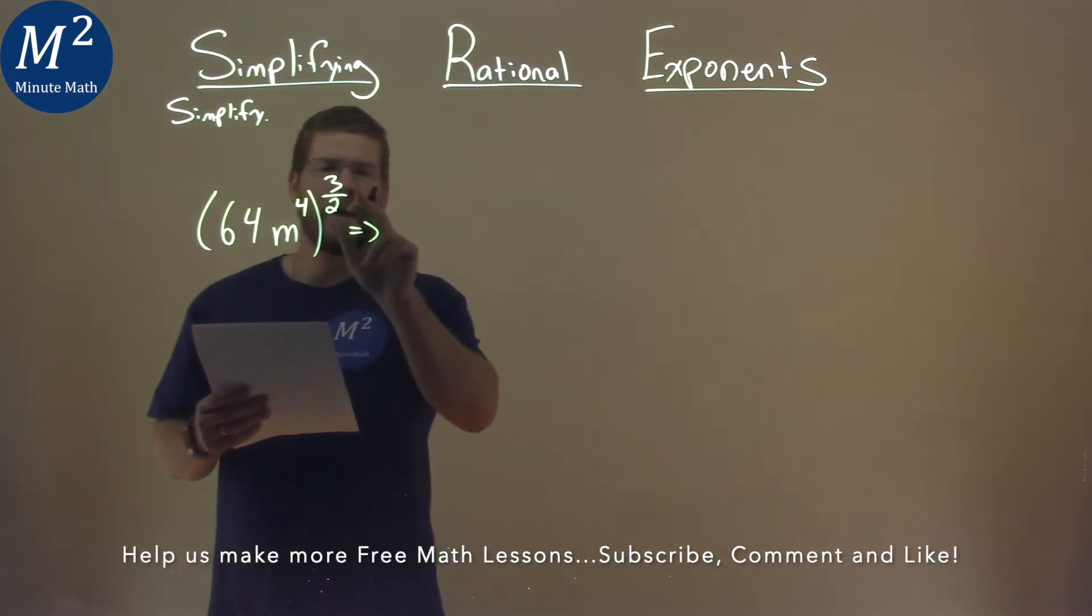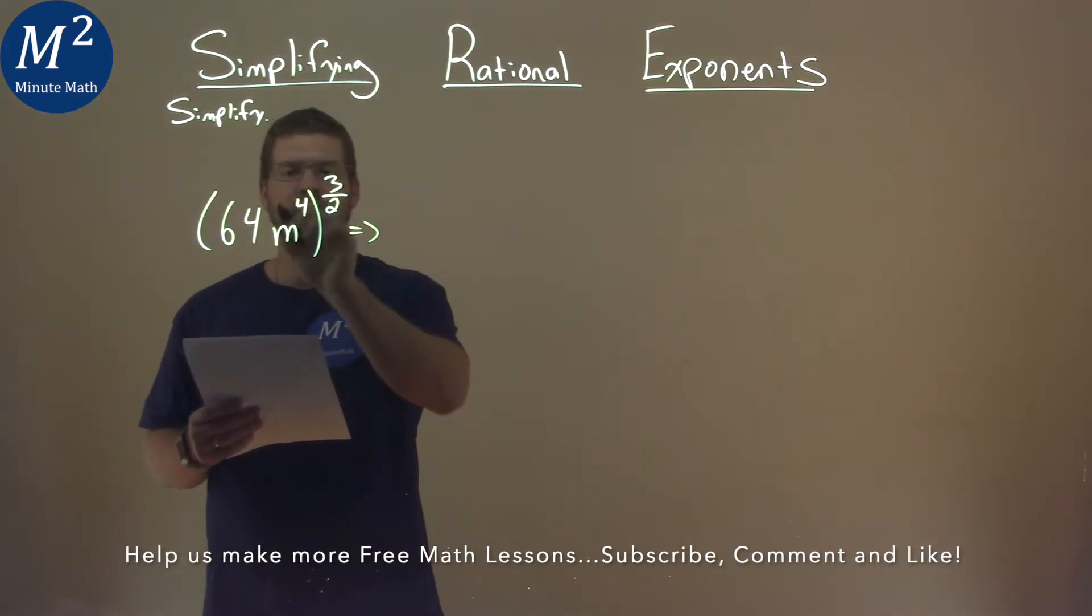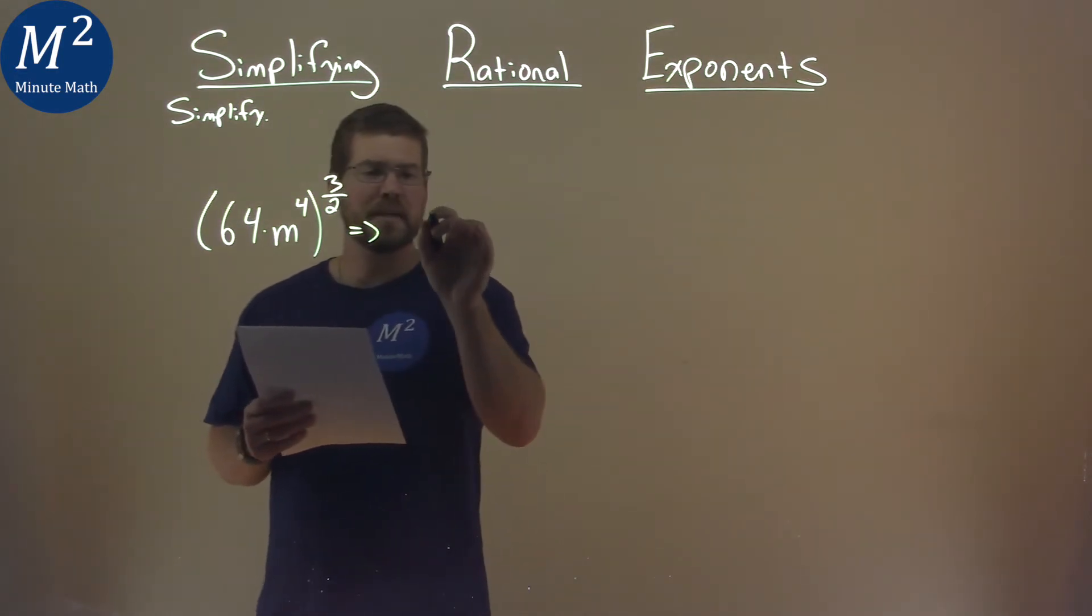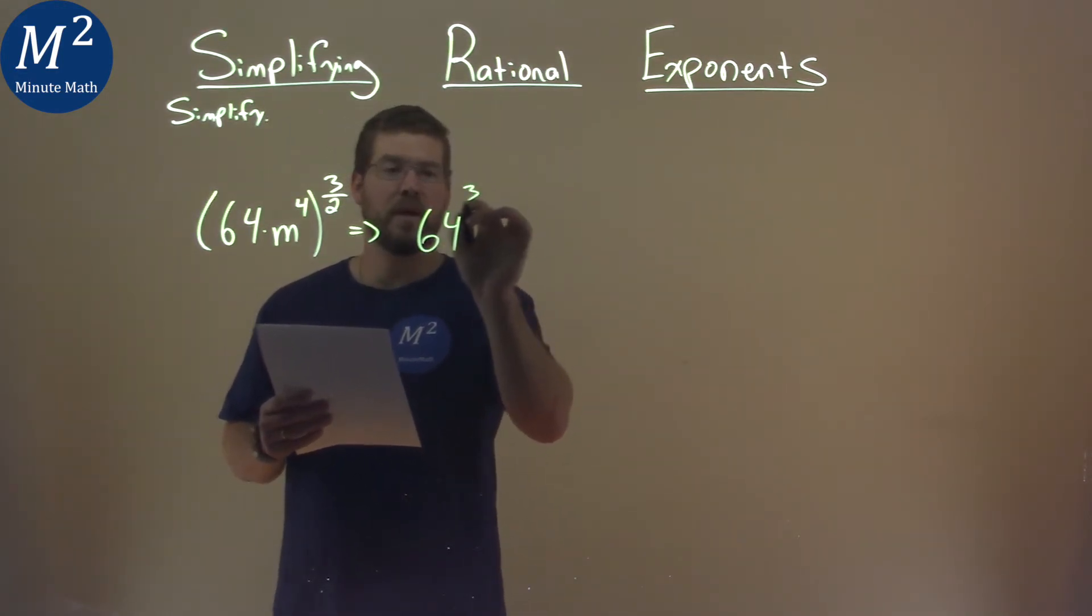Well, we know here, when we have an exponent, we can distribute it essentially to both parts, this being separated by multiplication. So, this is really 64 to the three-halves power,